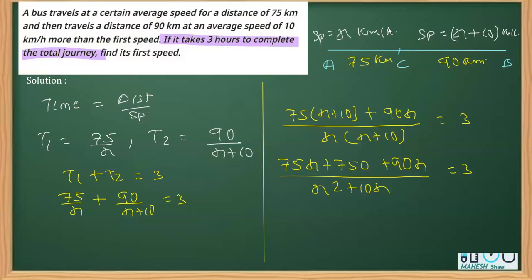Now we'll be doing cross multiplication. This gives you 3x square plus 30x, and on the other side I can see these are like terms - 75x and 90x are both in terms of x - so we can add them and say this will give you 165x plus 750.